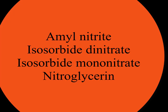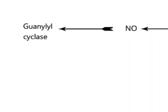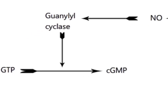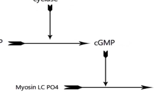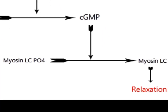Mechanism of action. Nitrates release nitric oxide (NO) within smooth muscle cells. Nitric oxide stimulates intracellular soluble guanylate cyclase, which leads to an increase in formation of intracellular cyclic guanosine monophosphate (cGMP). cGMP activates cGMP-dependent kinase, decreasing phosphorylation of myosin light chains by increasing activity of myosin light chain phosphatase, an enzyme that removes phosphate. The reduced phosphorylation of myosin light chains causes vasodilation.